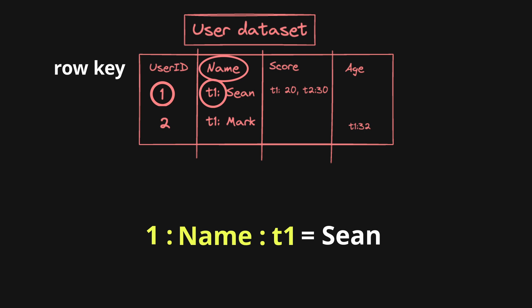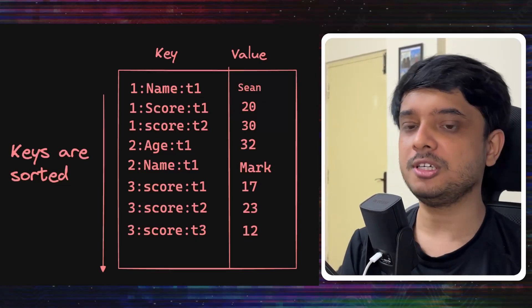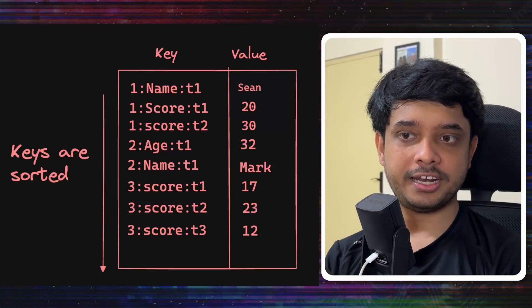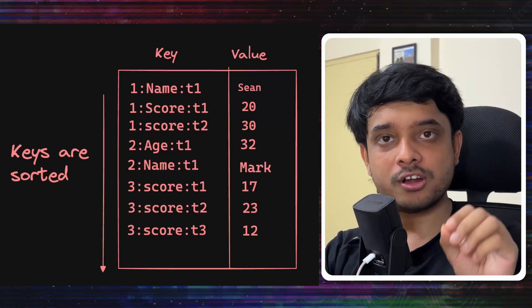It creates a string key that we will put in our key value database and corresponding to that we will put our value. At this point we need to know something important about RocksDB. The index it has, the LSM tree index stores all the keys in ascending order on the disk.